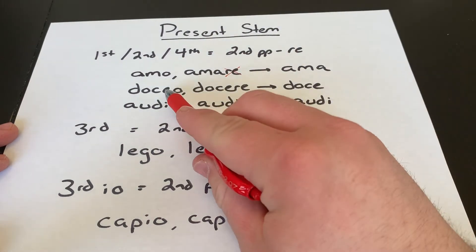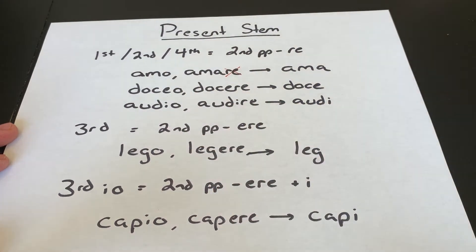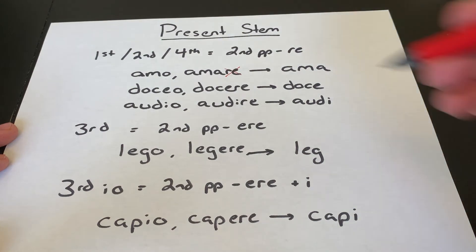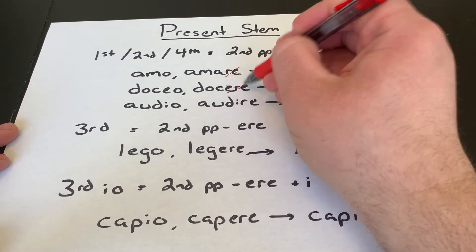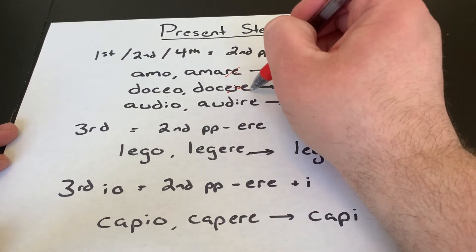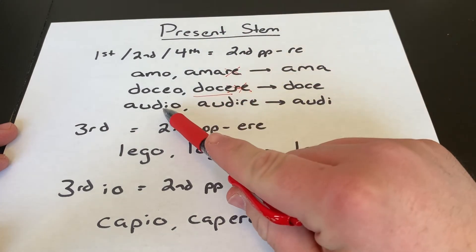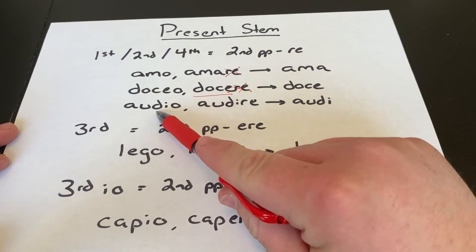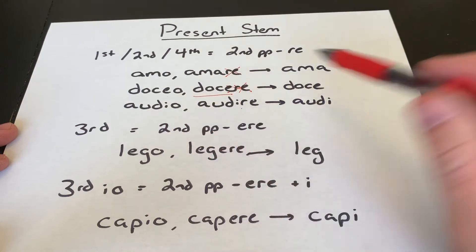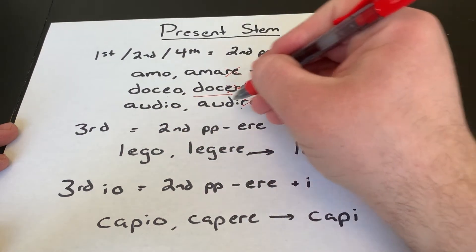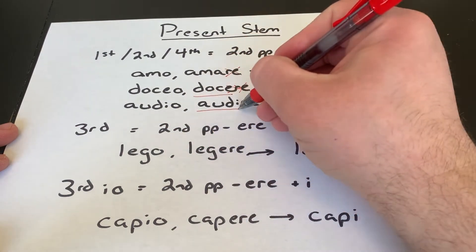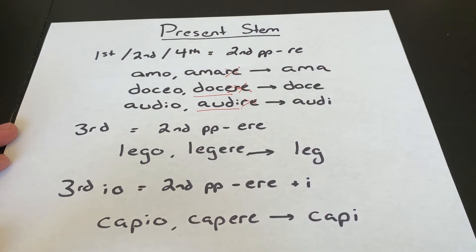The same applies to doceo, docere, which is second conjugation. You take off the RE and you get doce. Same thing for fourth conjugation: audio, audire — take off the RE and you get the stem audi.